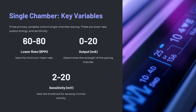Common programmable variables for single chamber pacing: heart rate from 60 to 80 beats per minute, output energy from 0 to 20 milliamperes, and sensitivity from 2 to 20 millivolts, which sets the threshold for sensing intrinsic activity.